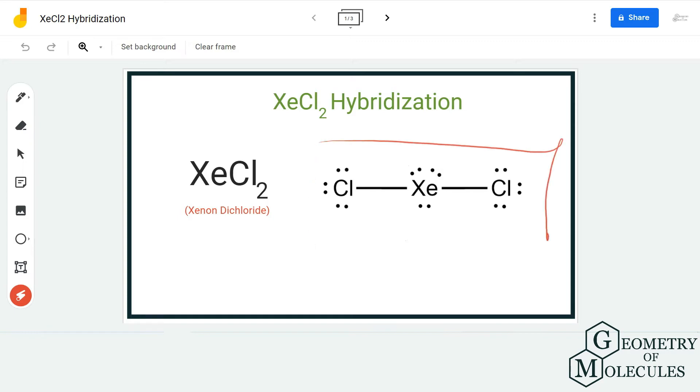look at its Lewis structure. Here is the Lewis structure of XeCl2, in which the xenon atom is forming two single bonds with two chlorine atoms. Besides that, there are three lone pairs on the central atom.